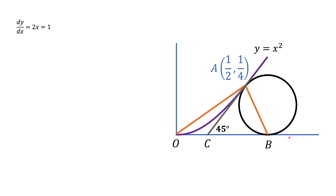If we connect points A and B to the center of the circle, point D, the angle between BD and the horizontal axis is 90 degrees, and the angle between line AC and line AD is also 90 degrees. That's because we're dealing with angles between a tangent line to a circle and the radius. We then draw a horizontal line AE and a vertical line ED, finding that triangle AED is a right triangle, with angle EAD equal to 45 degrees.